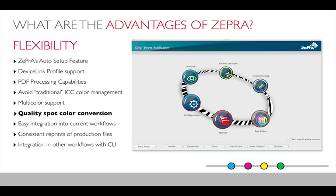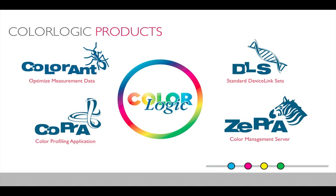This time it's about quality spot color conversion, and we want to look into this in more detail in this technical webinar. For those not familiar with our products, this slide is a short overview of our main tools. We start by optimizing measurement data with ColorEnd, then create optimized printer profiles and DeviceLink profiles with our Copra color profiling application. Or, if you're working according to international printing standards, you can use our predefined standard DeviceLink profiles — including tag and save ink profiles — usable in any ICC-aware application or in our ColorServer Zebra.